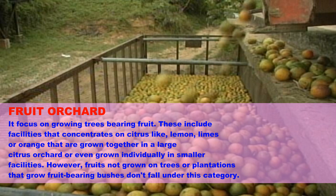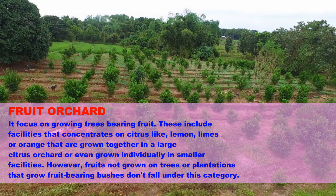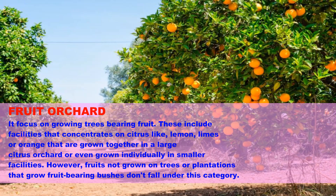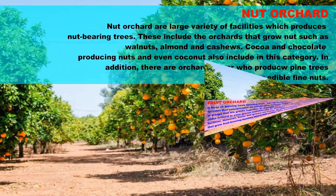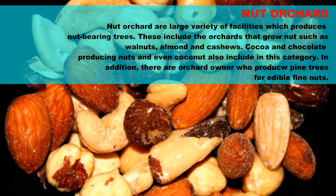Growing trees bearing fruits includes facilities that concentrate on citrus trees like lemons, limes, or oranges that are grown together in large citrus orchards, or even grown individually in smaller facilities. However, fruits not grown on trees, or plantations that grow fruit-bearing bushes, do not fall under this category.